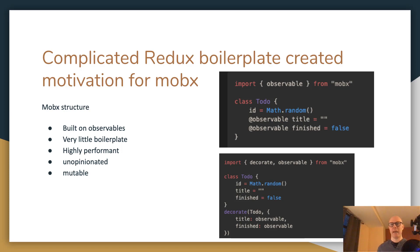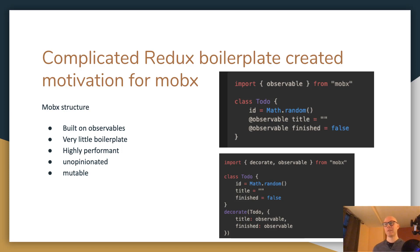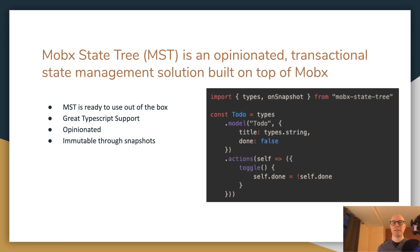MobX is also mutable, which is kind of good and bad. It's bad because you lose transaction support, and it's a little less optimized for React — with an immutable structure you get the benefit of minimizing the number of re-renders in a React application. Those downsides with mutability and the unopinionated structure created motivation for MobX State Tree, which is simply an opinionated and transactional state management solution built on top of MobX.